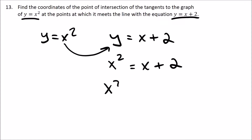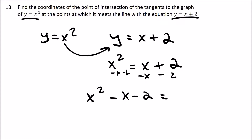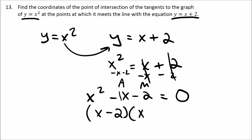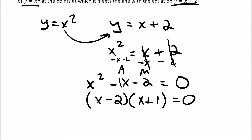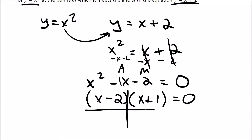I'm going to bring everything over to one side — minus the x, minus the 2 — so we get x squared minus x minus 2 equals zero. I'll factor this: two numbers that add to negative one and multiply to negative two, which would be negative two and positive one.